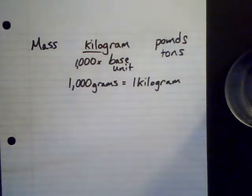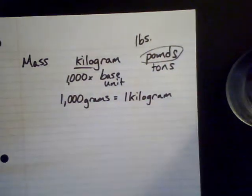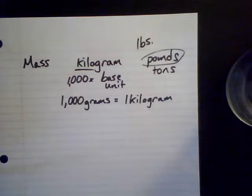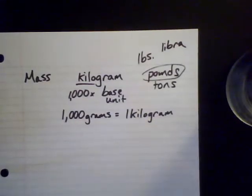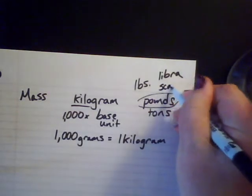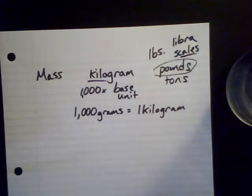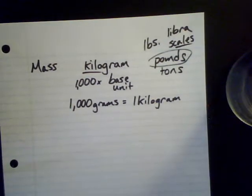As an aside — you know that pounds is abbreviated LBS. Have you ever wondered why? It actually comes from the constellation Libra, or at least the same Latin word. Libra means "the scales," and if you know anything about astrology, Libra has that balancing symbol. So LBS stands for Libra, which is kind of interesting.